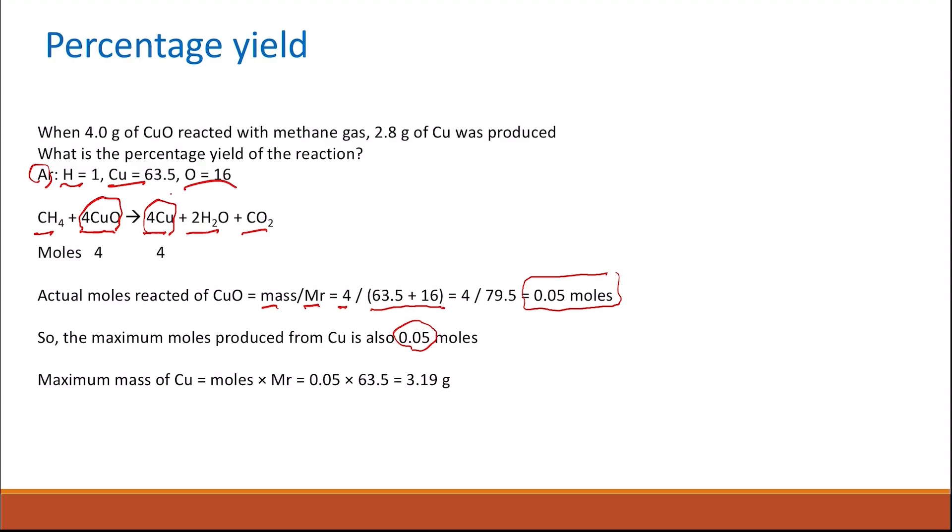Now the maximum mass of copper, to find the mass from the moles, this is the maximum mass to be produced from this reaction. We multiply the moles by the formula mass. So 0.05 times 63.5, that will give you 3.19 grams. So the maximum product that is expected from this reaction is 3.19 grams.